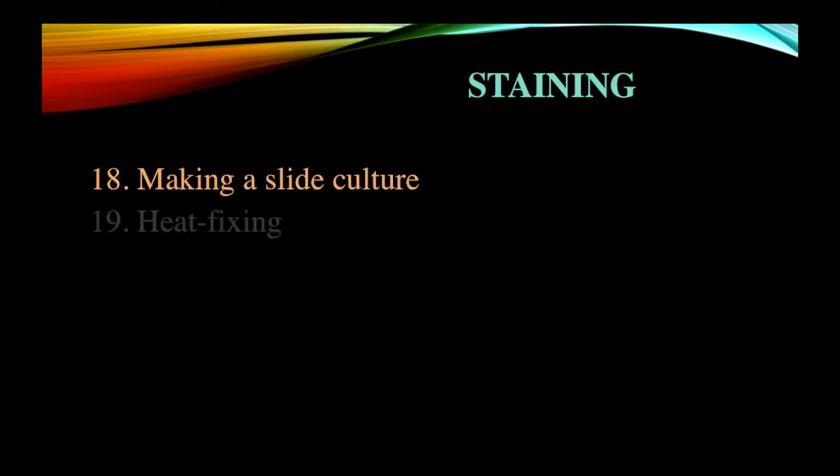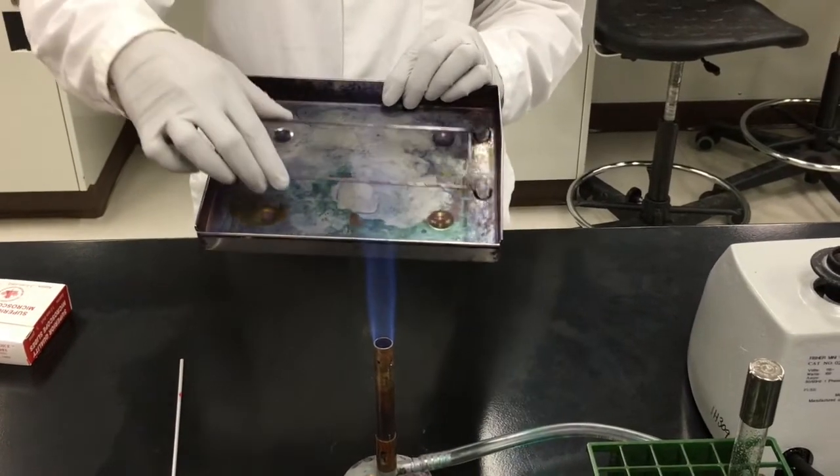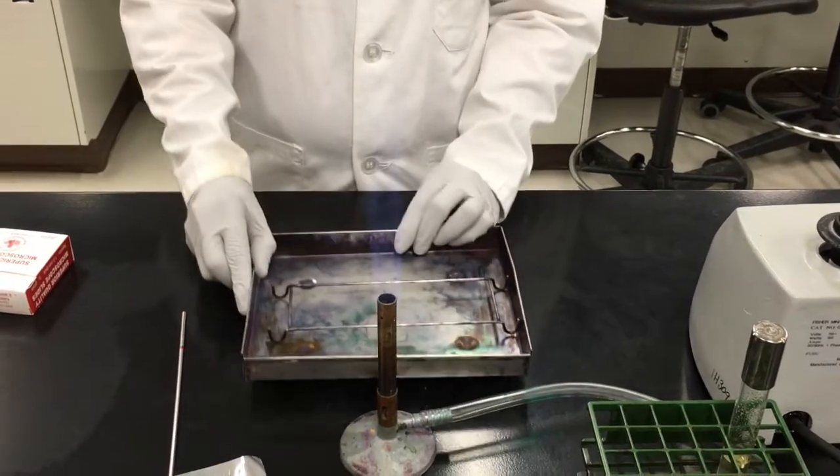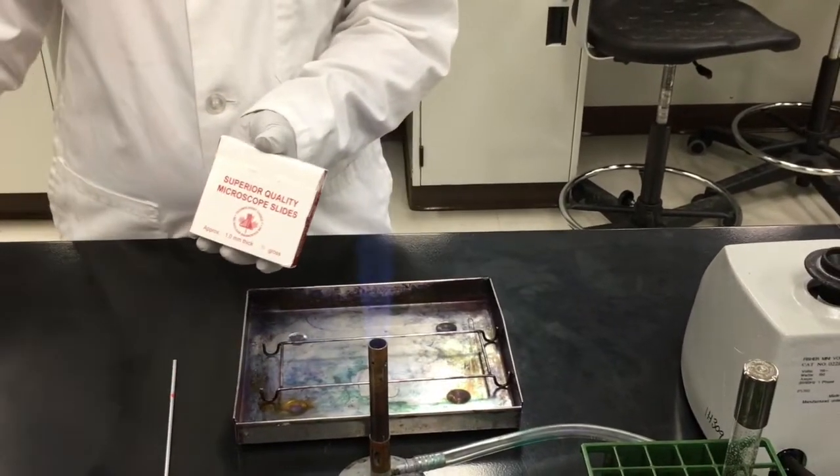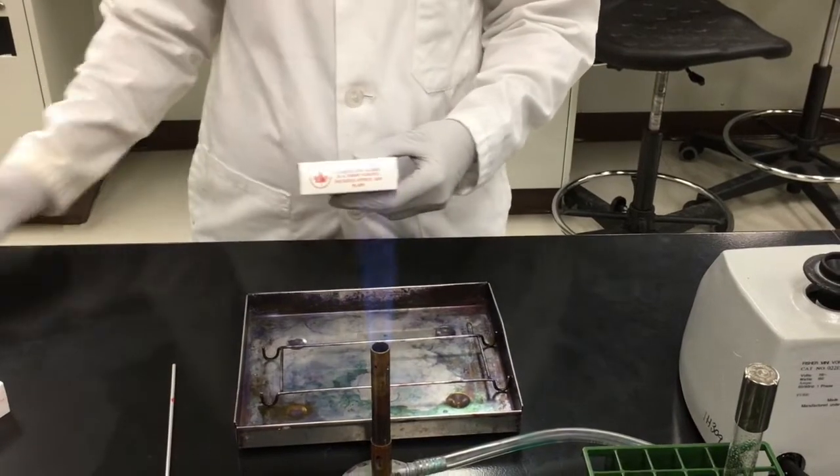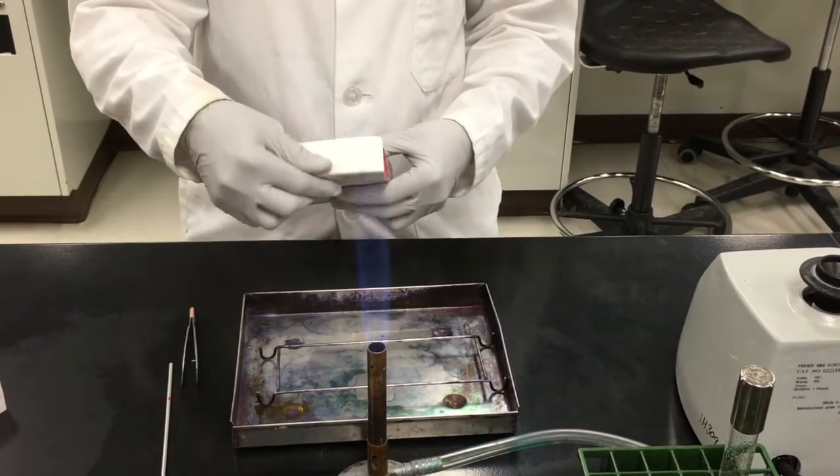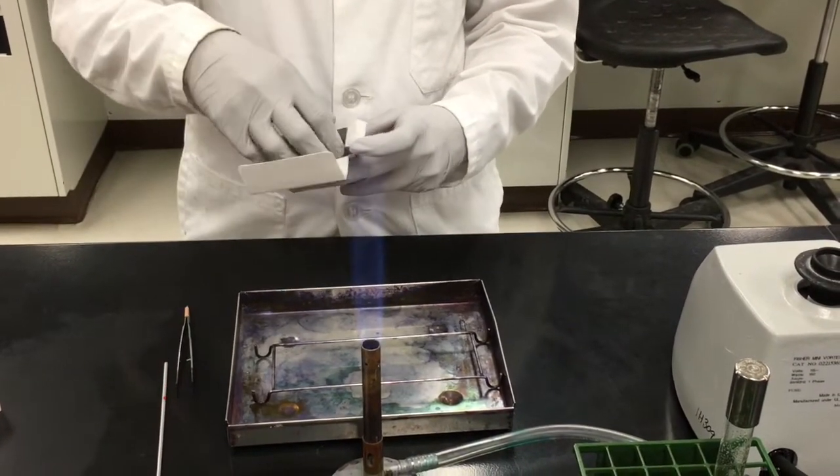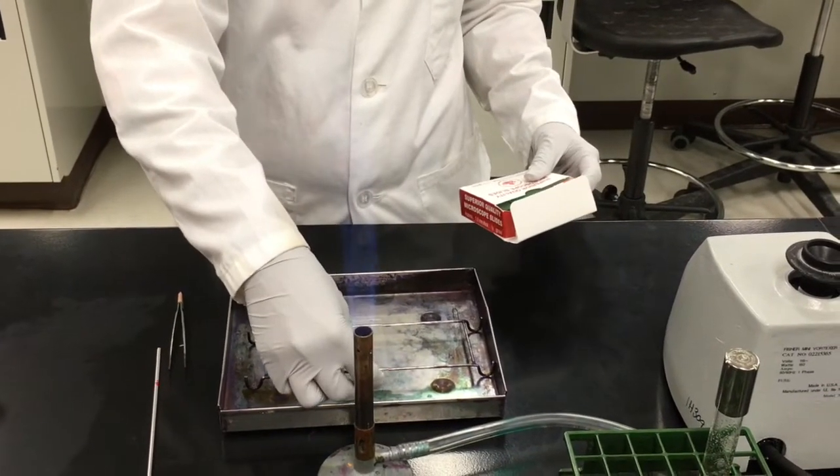The first step in the staining procedure is to make a slide culture. In order to do this, take out your staining tray with the insertable rack, place it on your bench top. Locate the box of the clean glass slides as well as a box of cover slips. Tweezers will be used to manipulate the slide during the staining procedure. Place a clean glass slide on top of the rack inside of your tray.